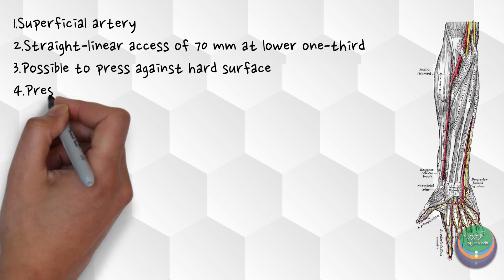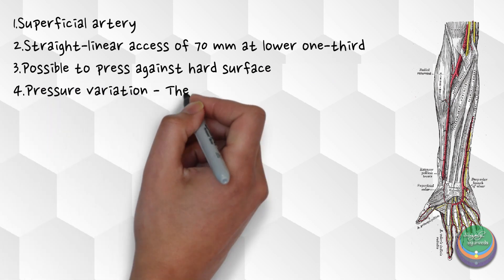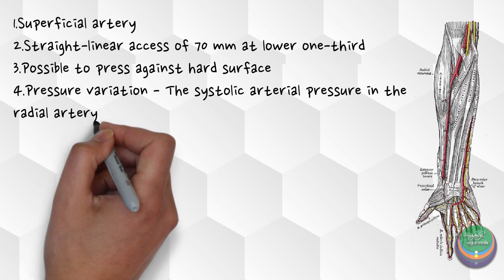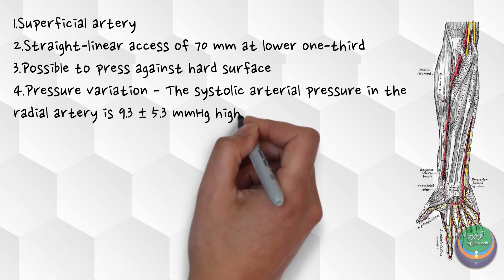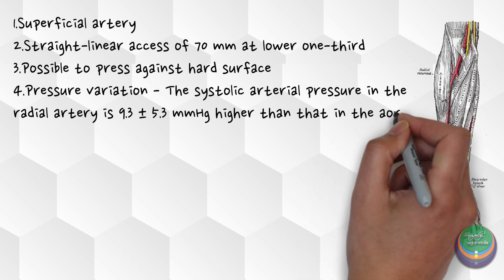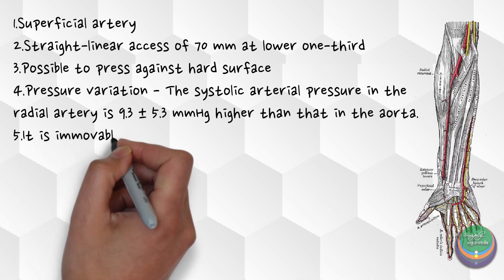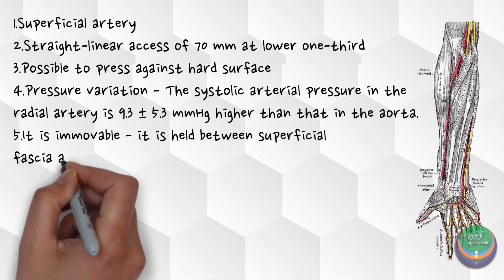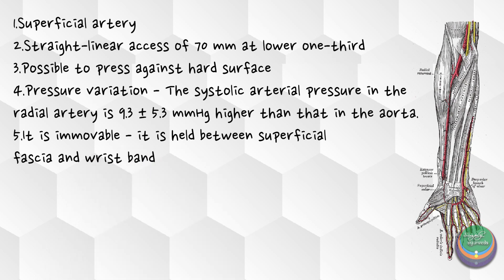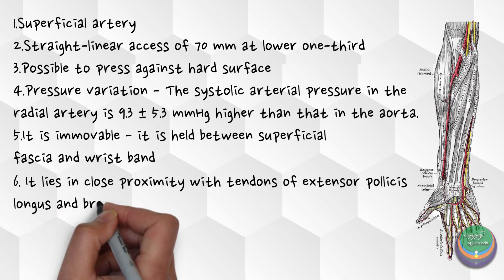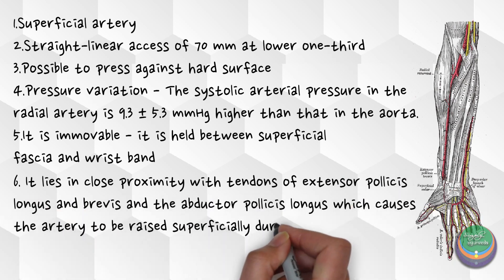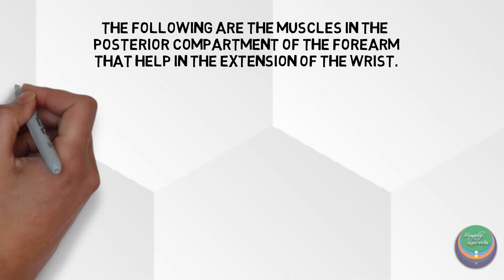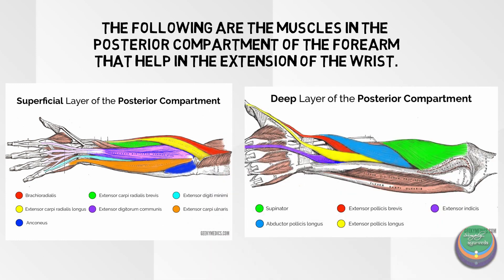Hemodynamically, there is a pressure variation in the aorta and radial artery. The systolic arterial pressure in the radial artery is 9.3 plus or minus 5.3 mmHg higher than in the aorta. This is due to the reduced lumen size providing better access to the pulse reading. The radial artery is immovable as it is held between two fibrous structures — one at the superficial fascia and the other at the wristband. Due to the close relation of the distal radial artery with the tendons of extensor pollicis longus, extensor pollicis brevis, and abductor pollicis longus, when the wrist is extended, the radial artery is raised superficially.